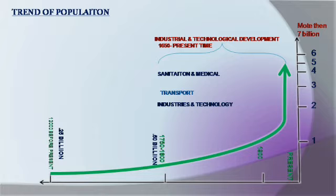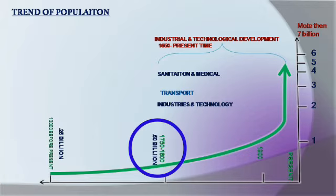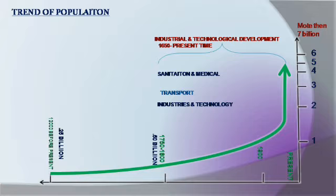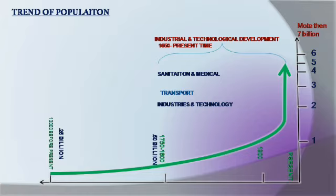Then we have the period of 1750–1800, where the population reached more than 7 billion. From that point, the population growth in each particular period of time was different.